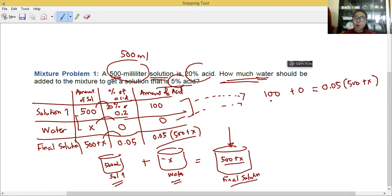Let's solve them. 100 plus 0 is 100. 0.05 times 500 that will give us 25. Then 0.05 times x is 0.05x. Let's transpose. Transfer 25 to the other side. So 100 minus 25 equals 0.05x. That's 75 equals 0.05x.